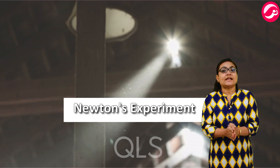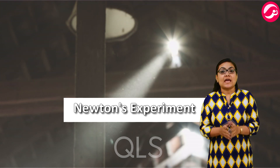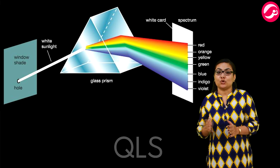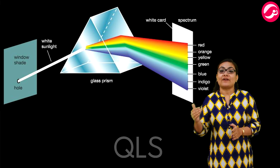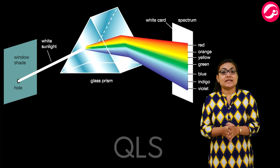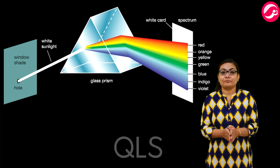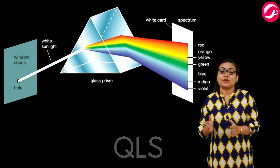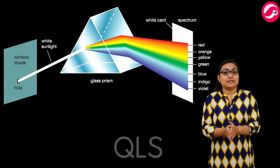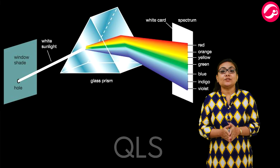He allowed sunlight to enter his darkened room through a small hole in a window and placed a prism in the path of the rays, as shown. He received the light emerging from the prism on a white screen. He expected to see a single white image of the Sun, but instead he saw a band of colors of a rainbow. Starting from the side of the base of the prism, he saw seven colors.